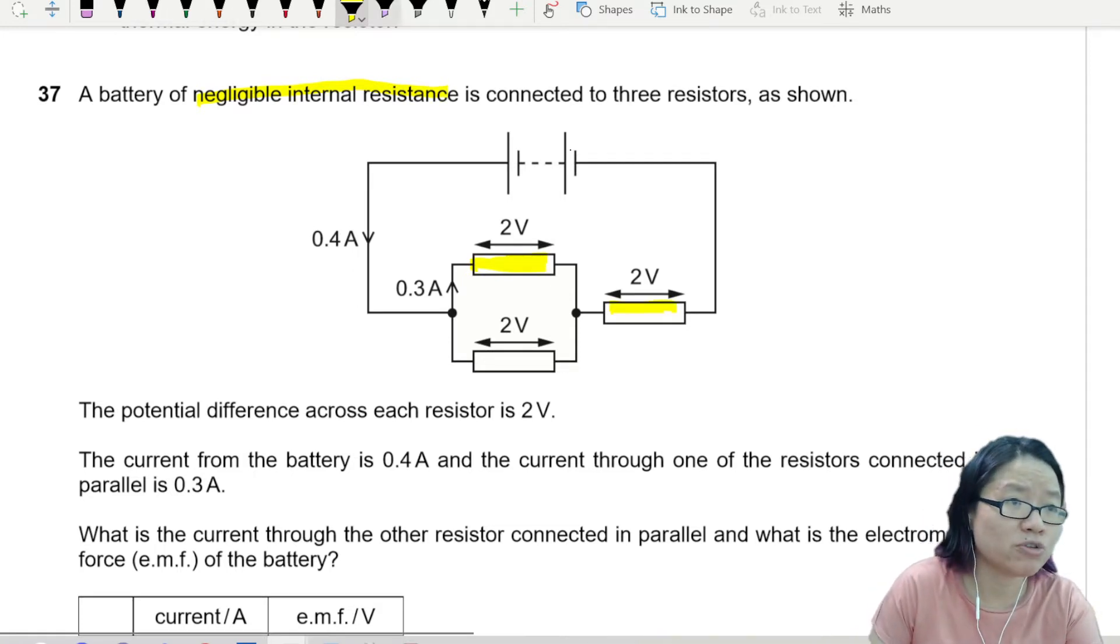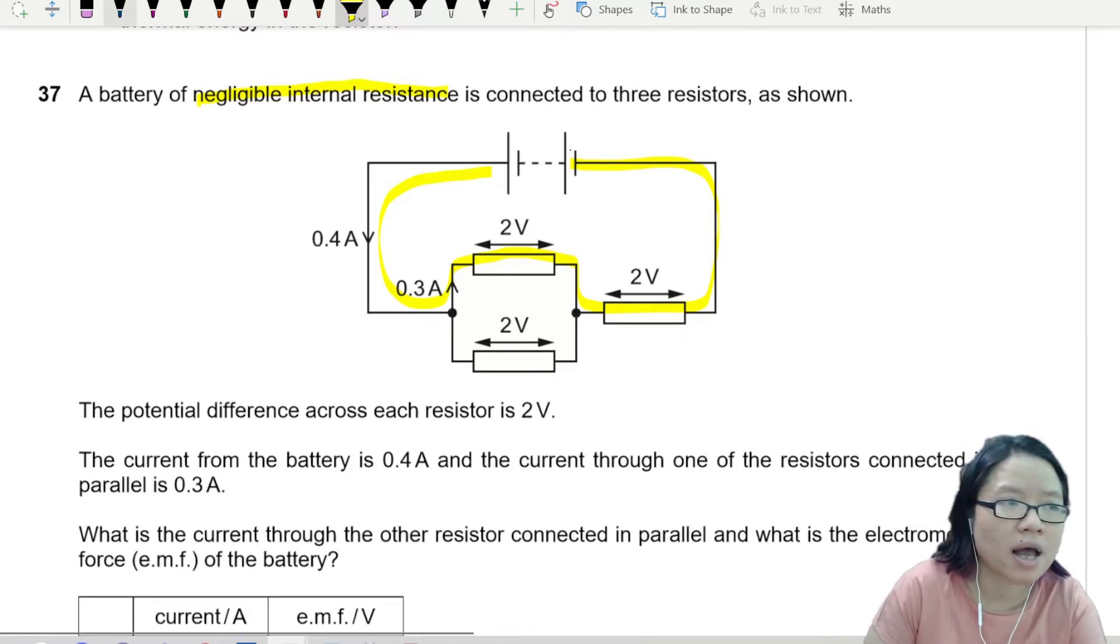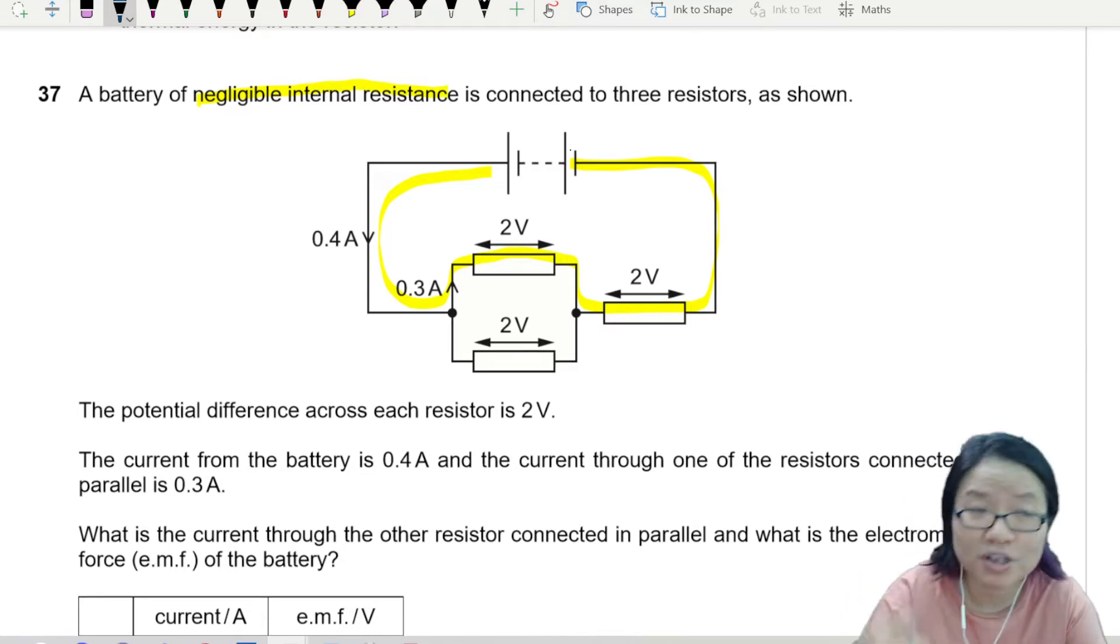If I use Kirchhoff's law, Kirchhoff's second law, and I consider a closed loop, let me look for you. This one here is a closed loop. Sum of EMF is sum of potential difference. The energy users, the potential difference, the energy user converting electrical to non-electrical is this 2 and this 2. Who provides the energy? Obviously the battery. So the battery EMF is 4.0 volts because it's 2 plus 2.